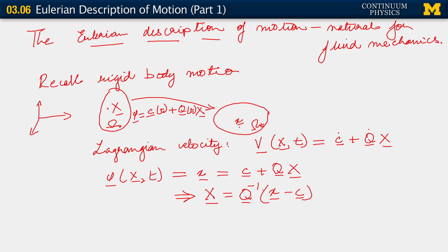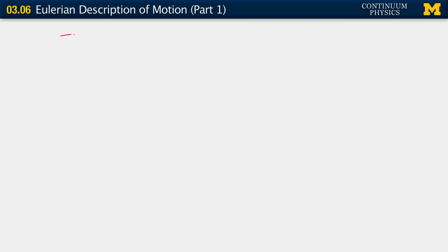But Q is orthogonal. Q belongs to this special orthogonal group in three dimensions, SO(3), which implies that Q transpose Q is the second order isotropic tensor. Which also means that Q inverse can actually be written as Q transpose. That's the special property of orthogonal tensors. So it implies for us then that capital X is Q transpose times x minus c.